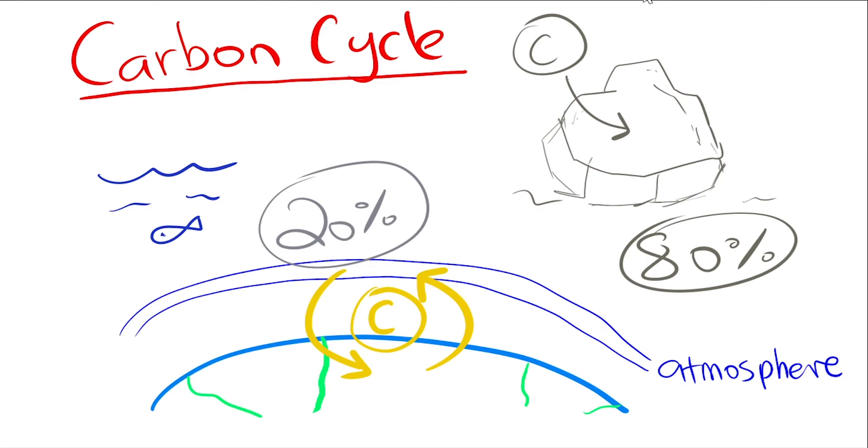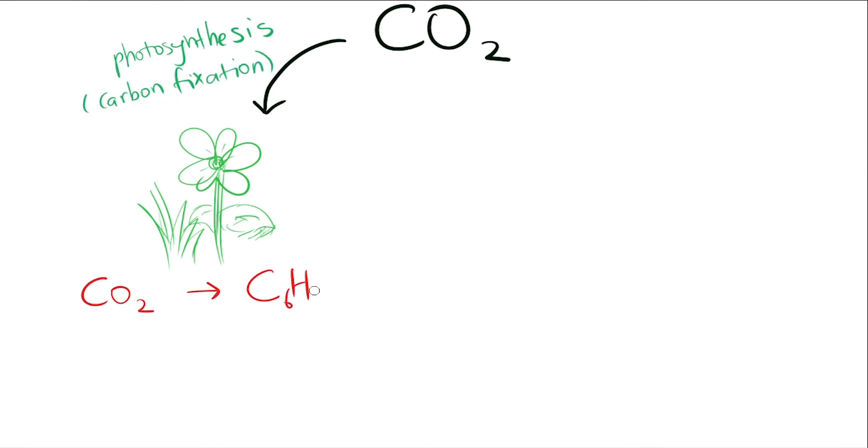The carbon cycle is really an exchange between those reservoirs. Plants take in carbon dioxide from the atmosphere using photosynthesis. This converts the inorganic CO2 into organic glucose. Organic carbon such as glucose is a form of reduced carbon, which means that it stores energy.